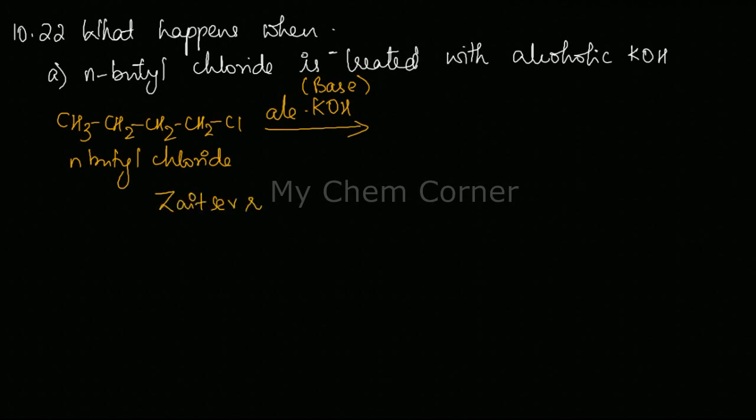is called Zaitsev's rule. As per the rule, it says that when the OH acting as a base is going to pick up a hydrogen, it's going to pick it up from the carbon that contains the least number of hydrogen atoms.